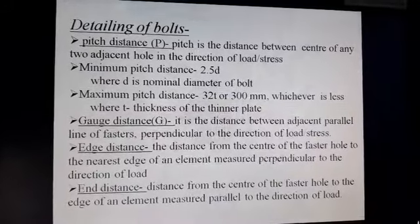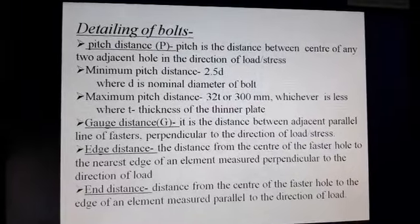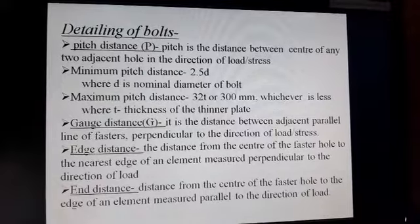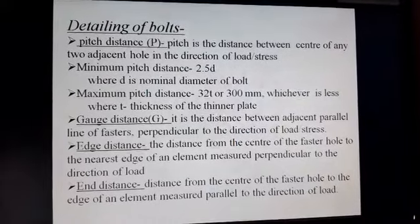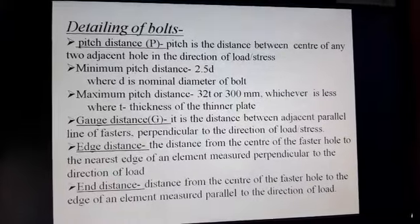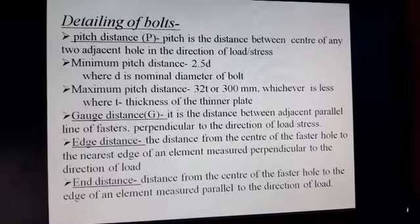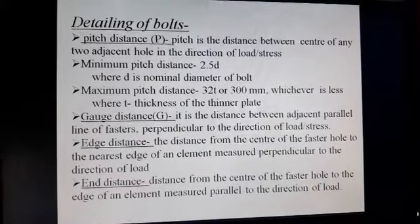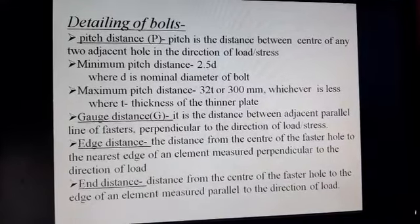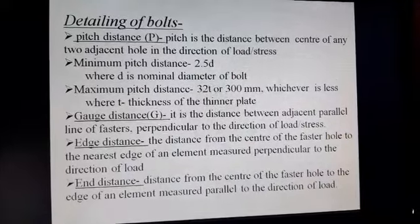Now the next point is details of bolt. The first term is pitch distance. Pitch distance is the distance between the center of any two adjacent holes in the direction of load and stresses. Minimum pitch distance is 2.5D, where D is the nominal diameter of the bolt. Maximum pitch distance is 32 times the thickness or 300 mm, whichever is less, where T is the thickness of the thinner plate.